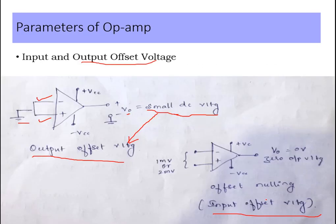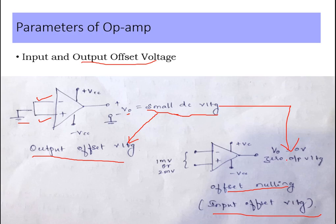Now let us move to input offset voltage. We apply a small DC voltage at the input terminal of an op-amp, in the range of 1 millivolt or 2 millivolts. The purpose of applying this input offset voltage is to produce a zero output voltage — that is, to make VO equal to zero volts. This process is called offset nulling.